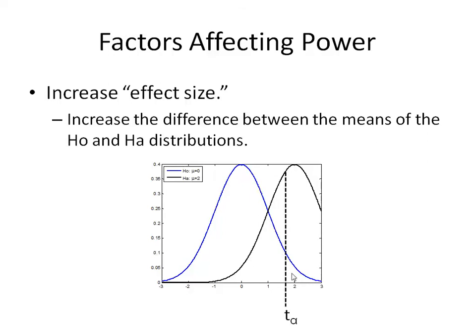If we pick the same point for our t-critical value, we can see that the area under the curve, this beta, has decreased relative to what it once was. So we're increasing our power by increasing our effect size.